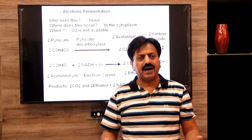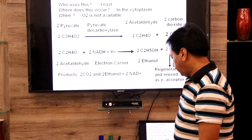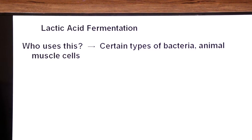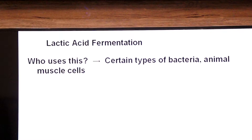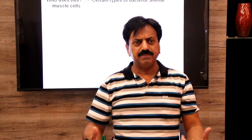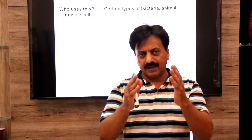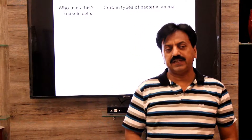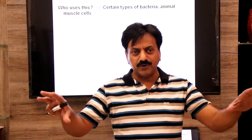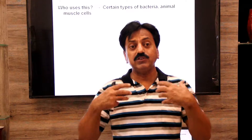Now we will study lactic acid fermentation. Who uses it? The answer is certain types of bacteria and animal muscle cells. When we do intense exercise, lactic acid begins to accumulate in our muscle cells in the absence of oxygen. Also, mature red blood cells do not contain mitochondria, which is why lactic acid fermentation also occurs in mature RBCs.